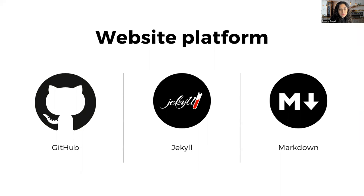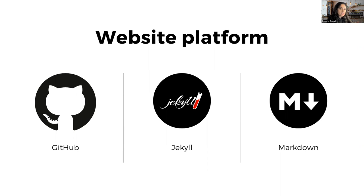For the development of the website, we used a very common combination of platforms and tools: GitHub, which was a place to host the files; Jekyll, which is a static site generator that we used to create the files and that integrates closely with GitHub; and Markdown, which is how most of the content was created. Markdown is a simple markup language that is both human and machine readable.